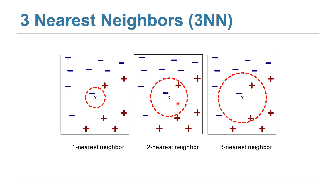If we use three nearest neighbors, we find the closest three examples to the given example. In this case, we found two positives and one negative. We take the majority vote — the majority are positive — so we predict the positive class for the given example. We predict the label of the given example to be the label of the majority vote within the neighborhood.